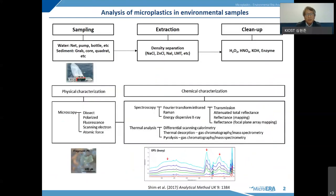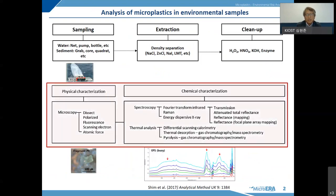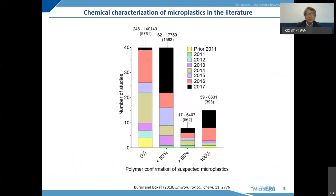The general procedure for microplastic analysis in environmental samples includes sampling, extraction and cleanup, and finally physical and chemical characterization. Today, my topic will cover the characterization part. Based on a literature review study, there is still very limited work using spectroscopic chemical confirmation methods for microplastic identification.